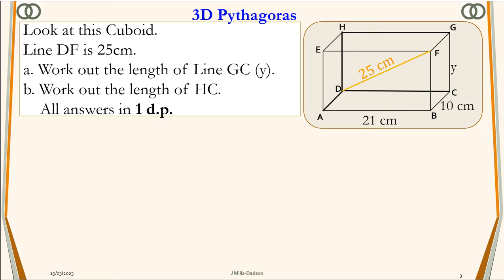The first thing we need to note is how to identify the longest diagonal in a cuboid. Not all diagonals are longest diagonals. So first, if you look at line DF, it's a longest diagonal.